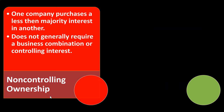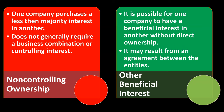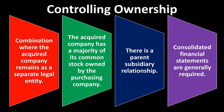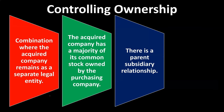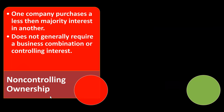We can also have a non-controlling ownership and other beneficial interests. You can have a merger, a controlling ownership, or a non-controlling ownership. Non-controlling ownership is where one company purchases less than a majority interest in another — less than 50%. This does not generally require a business combination or consolidated financial statements, as controlling interest is the triggering factor for combining financial statements.